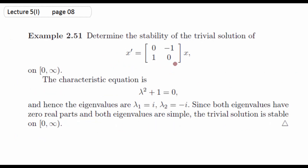ایک اور example: ایک 2×2 matrix جس کی characteristic equation λ² + 1 = 0 ہے، تو eigen values: λ = +i اور λ = -i۔ ان دونوں کا real part zero ہے اور multiplicity بھی one ہے — یعنی دونوں simple eigen values ہیں۔ جب simple eigen values ہوں تو ہم کہہ سکتے ہیں یہ system stable ہے۔